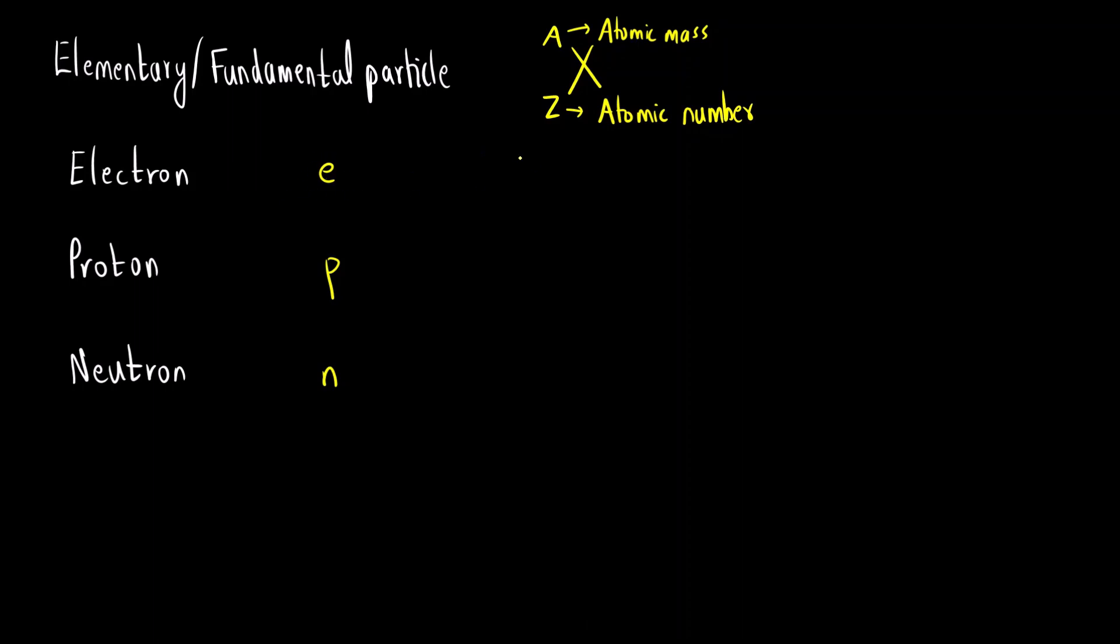If we talk about electron, what is the exact mass of an electron? We know it is 9.1 into 10 raised to minus 31 kg. This is very small. So we assume that the mass is negligible. That is, we consider it to be 0 while writing the nuclear reactions. And what is the charge of an electron? Minus 1.6 into 10 raised to minus 19 Coulomb. So this is negative, so we write minus 1.